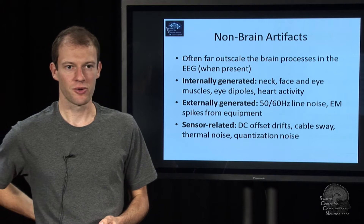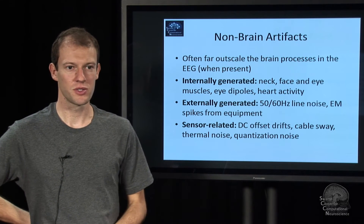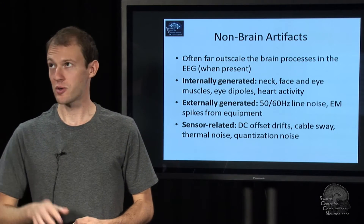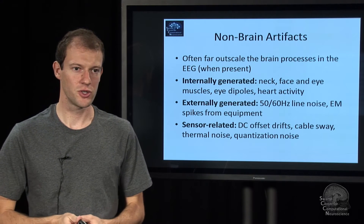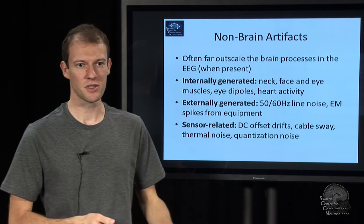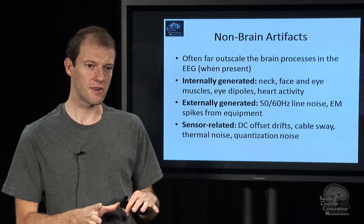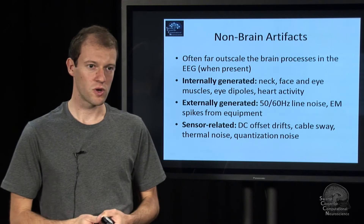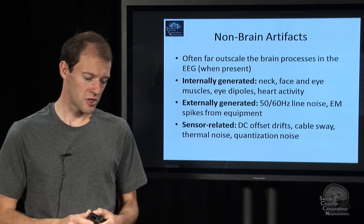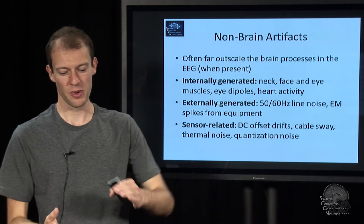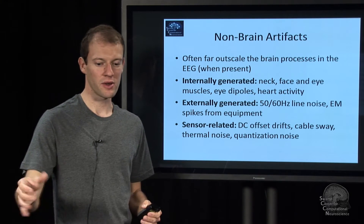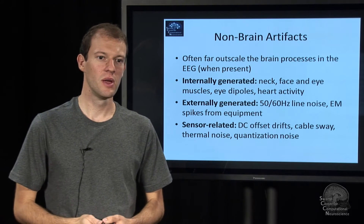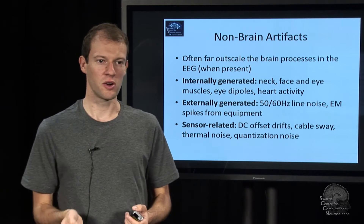Then there's externally generated artifacts like power line noise, EM spikes from fluorescent lights and things like that, which can mess up your signal. But in many cases these signals are simple enough that you can factor them out, because it's the same signal projected onto multiple electrodes — so if you observe it in one, you can subtract it from all the others if you know the weighting.